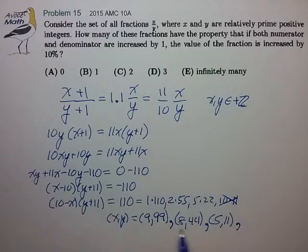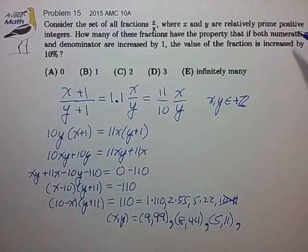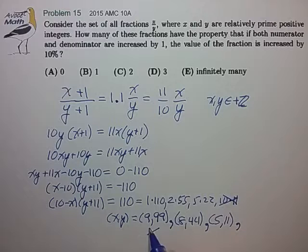So it looks like we have three potential solutions. And now we have to see if they satisfy the condition that x and y are relatively prime. It looks like 9 and 99 share a common factor, so that's not a valid solution.